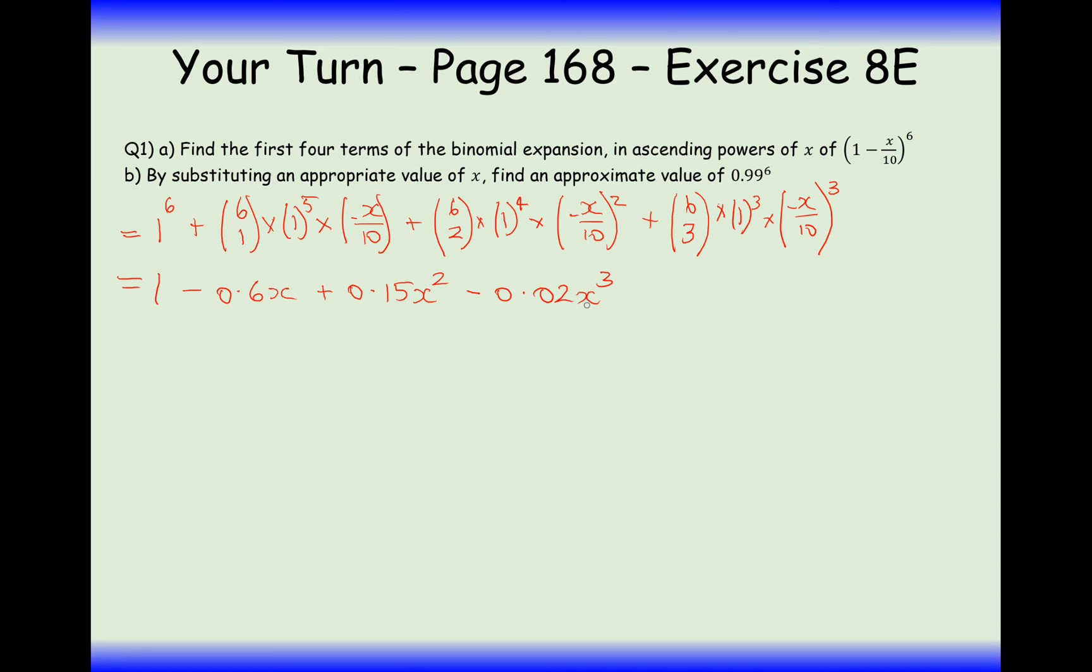The reason this is a negative 0.02 is because it's a negative cubed. So a negative cubed gives us another negative. So this is our final answer to part B, sorry, to part A.